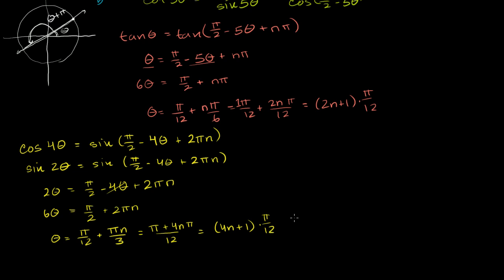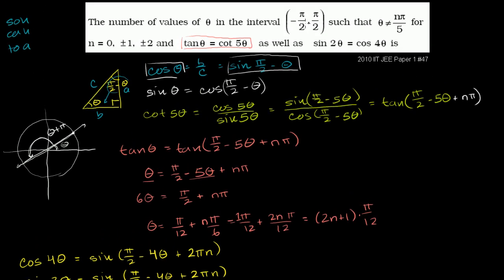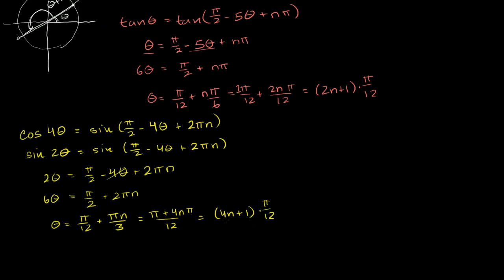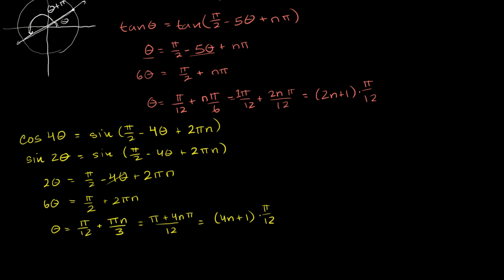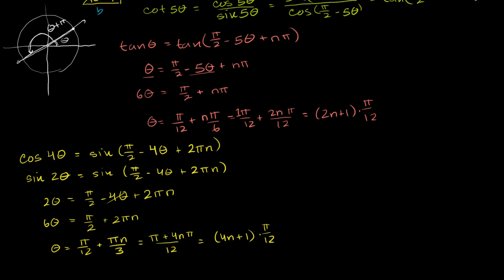Now we need to find where there's overlap between the two solution sets. We just have to count the number of solutions — we don't actually need to find them explicitly. Notice that any solution to the second equation (4n+1)π/12 is also a solution to the first equation (2n+1)π/12, because setting n in the first equal to twice the second's n gives the same values. So really, we can just count how many solutions from the second equation lie in the range, and we're done.